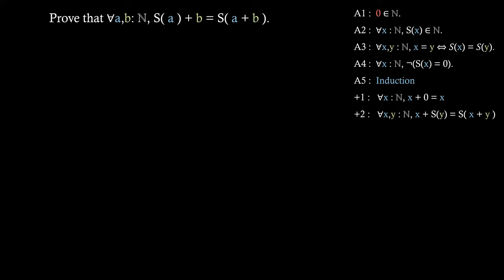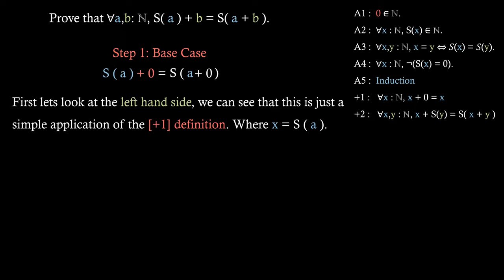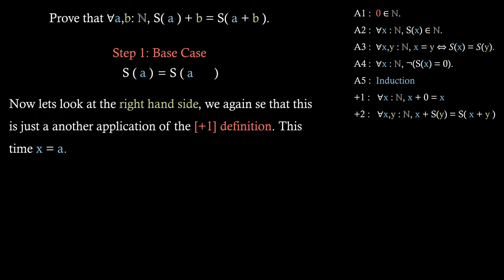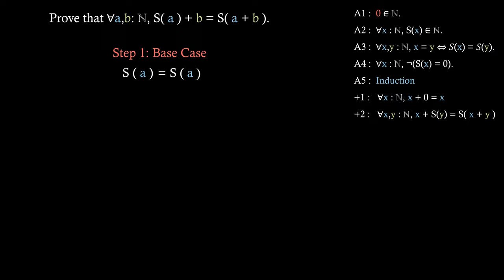Let's do the base case. We rewrite our statement replacing all b's with zero. On the left hand side, this is a simple application of the plus-zero definition where x equals the successor of a. On the right hand side, it's another application of the plus-zero definition with x equals a. This gives us the equality that the successor of a equals the successor of a. We then apply the third axiom to reduce this down to the simple equality a equals a, which holds by the reflexivity of the equals sign. So the base case is concluded.